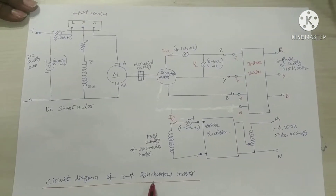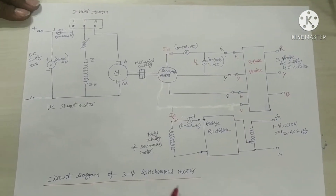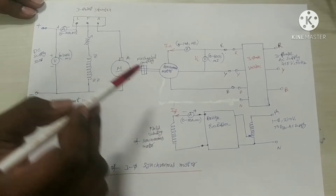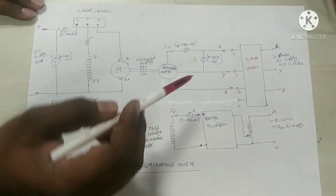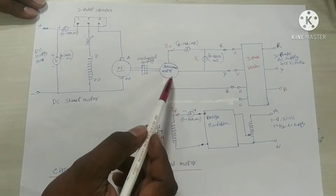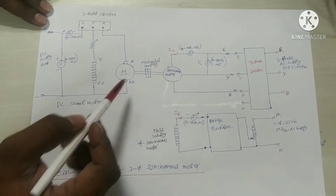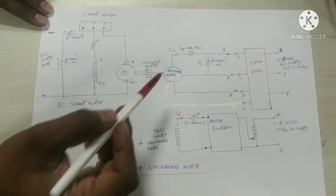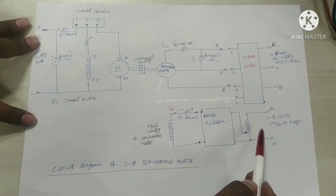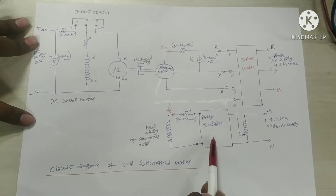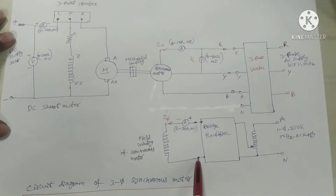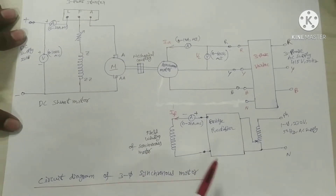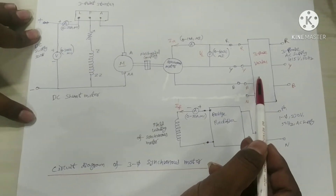This is the circuit diagram of the 3-phase synchronous motor. Here this is the field winding of the synchronous motor, and RYB are the stator winding terminals. This is the shaft of the synchronous motor. By using a single-phase variac and bridge rectifier, we are going to give the DC supply across the field winding of the synchronous motor.